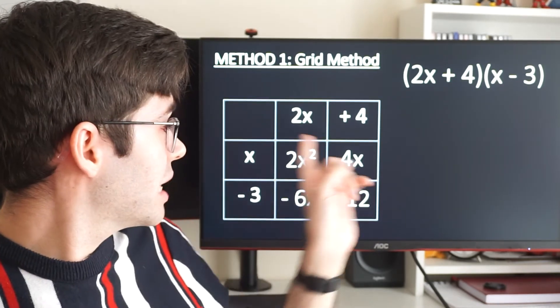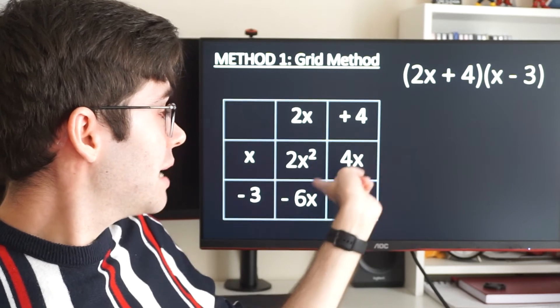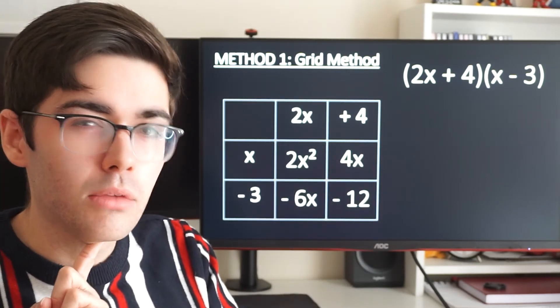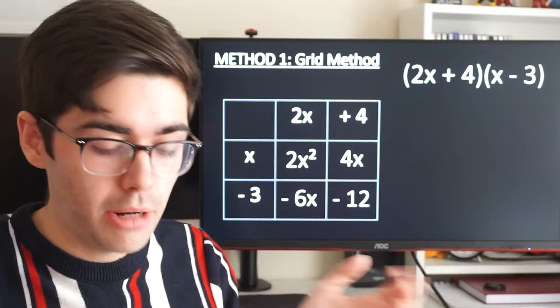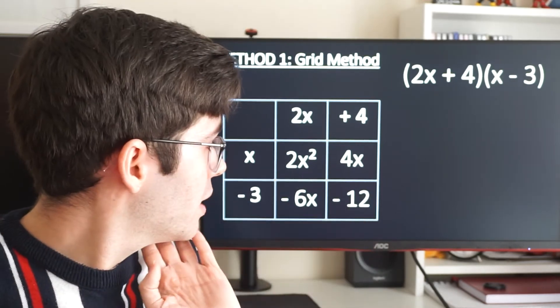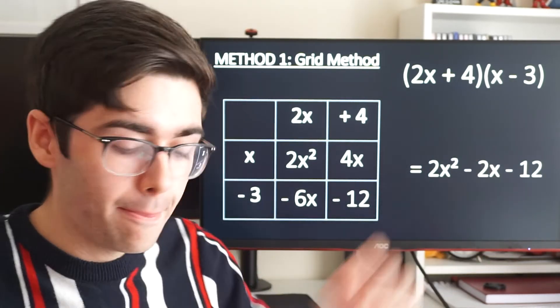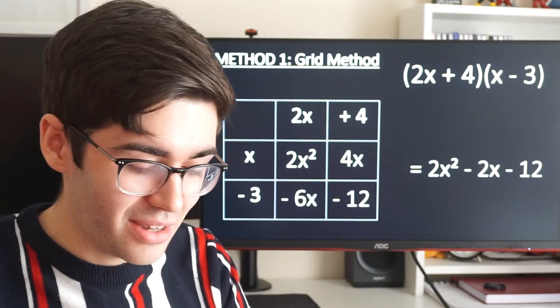When we add all that together, we'll get 2x squared on the front. Now, 4x minus 6x. What's 4 minus 6? It's minus 2. And then minus 12 on the end. So 2x squared minus 2x minus 12.